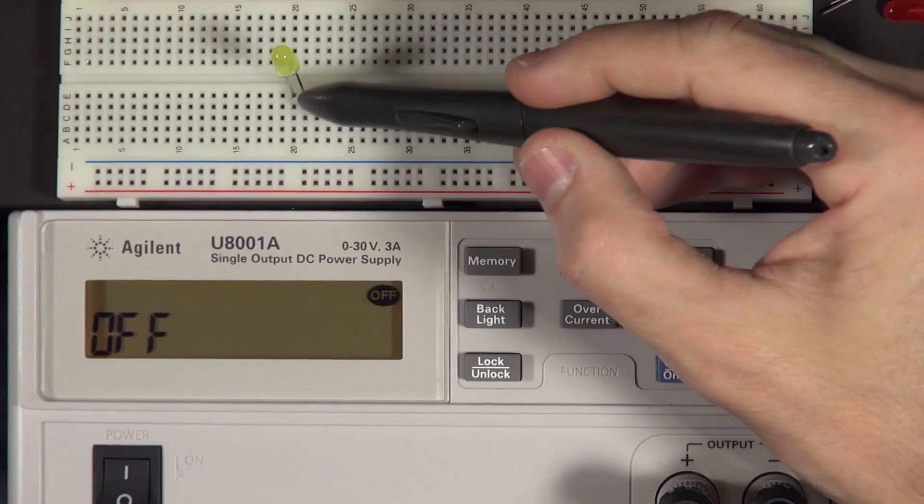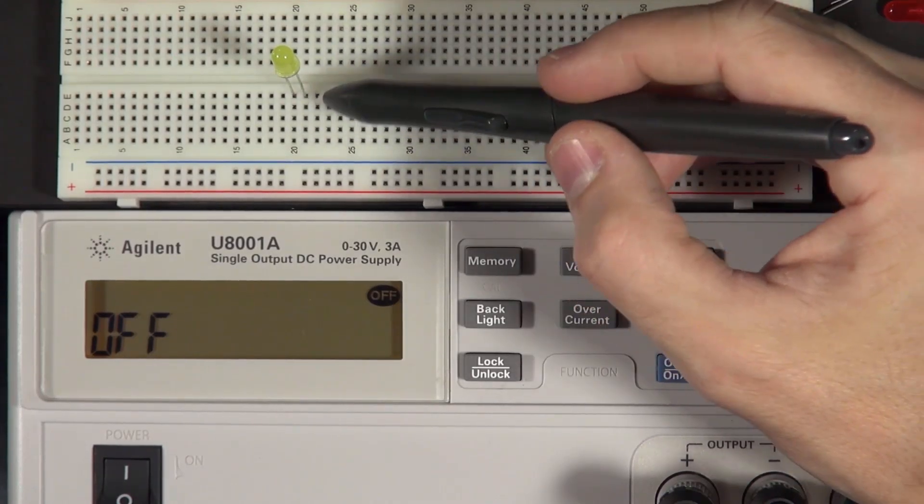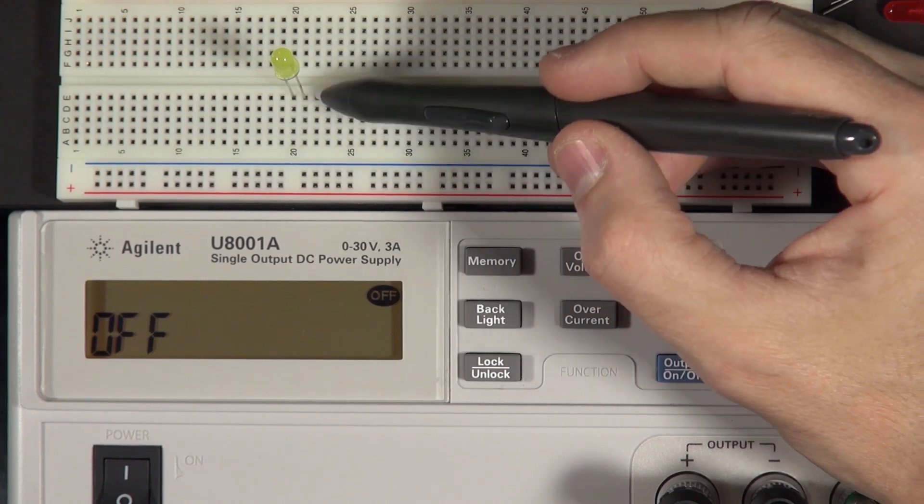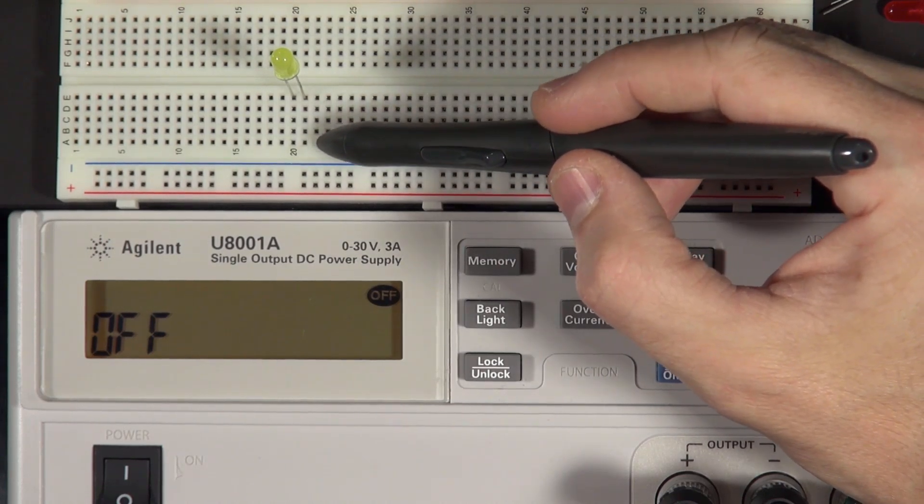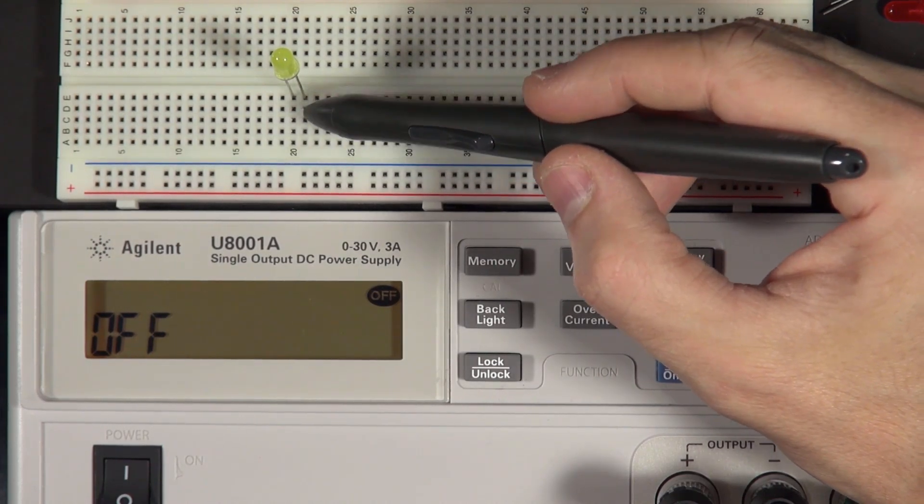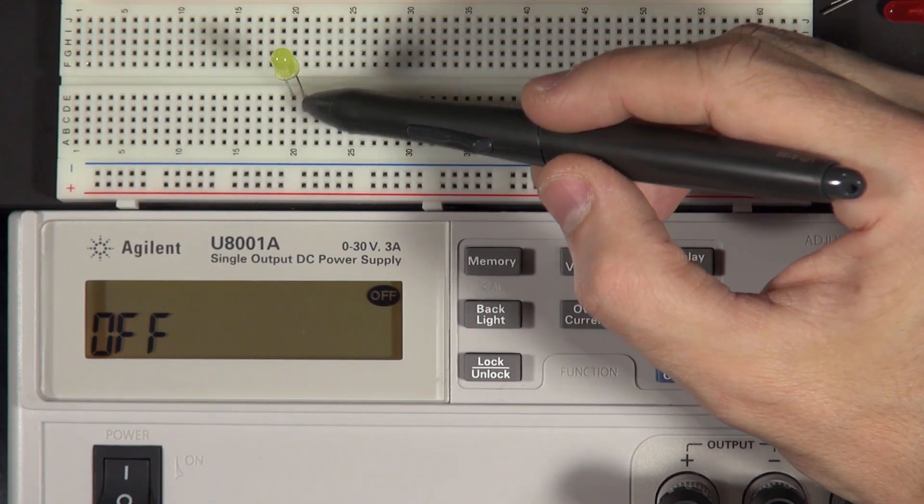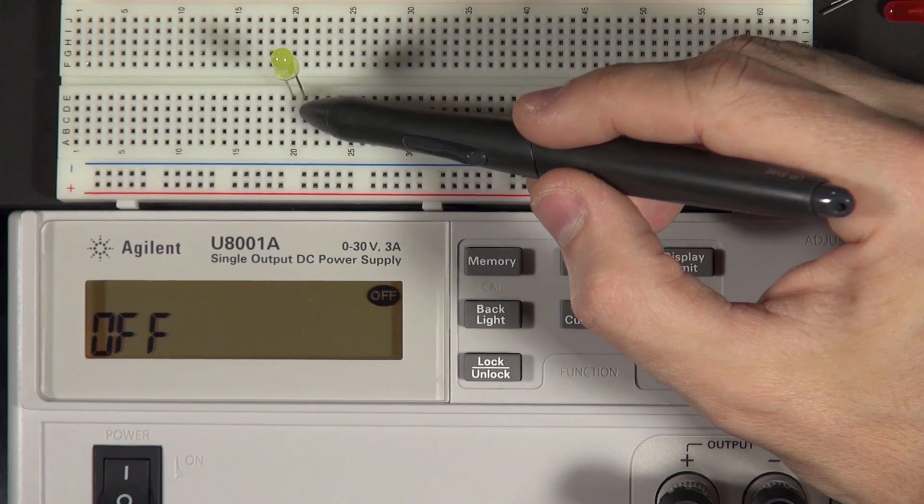And just so you know how this breadboard works, I've just put it in these two holes. And the way the breadboard works, each row of five, or I guess each column, the way we're looking at it right now, each column of five holes here is connected to each other. And so because the LED is connected to two different columns, the two leads are not connected to each other inside the breadboard.